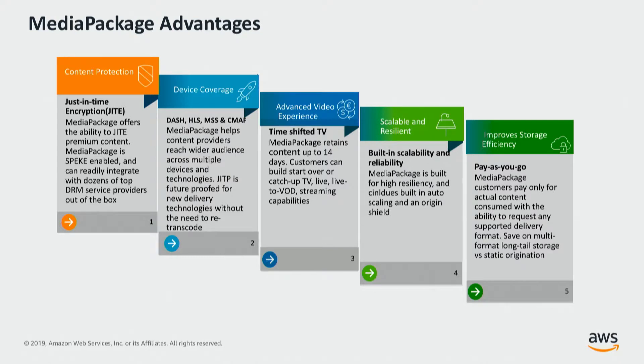Why is Media Package so great? First, it provides best-in-class content protection. Media Package does just-in-time encryption — while packaging, it also encrypts at that point. Media Package is integrated through SPEKE, which stands for Secure Packaging and Encryption Key Exchange, an initiative by AWS Elemental. SPEKE is the interface through which the packager connects with your DRM solution provider. Through SPEKE, Media Package is already integrated with 16 DRM solution providers and growing every day.